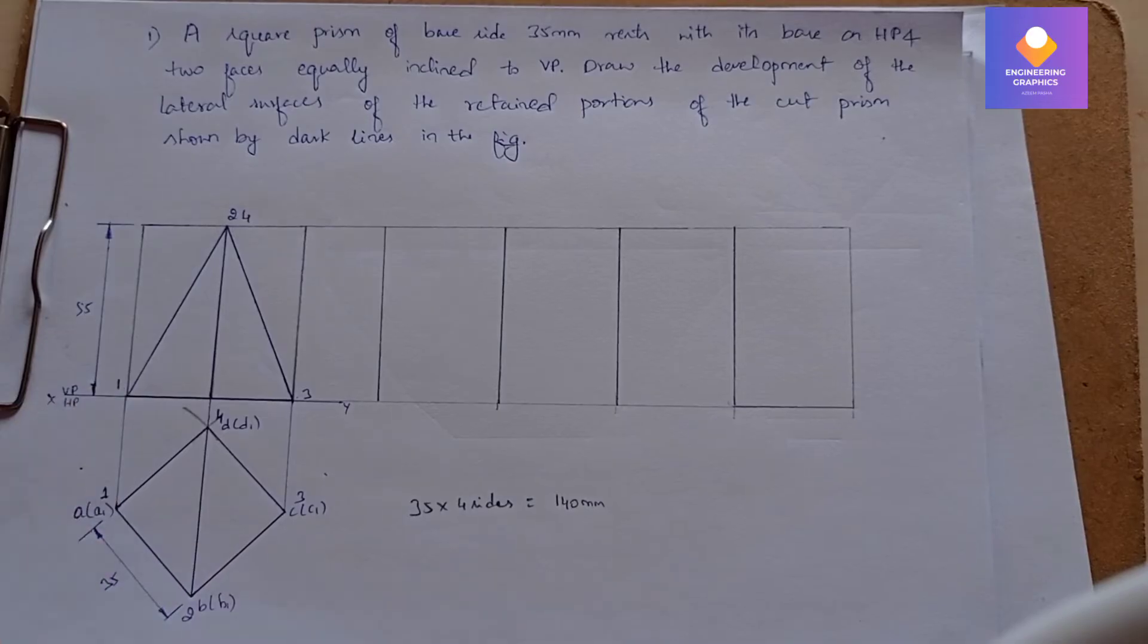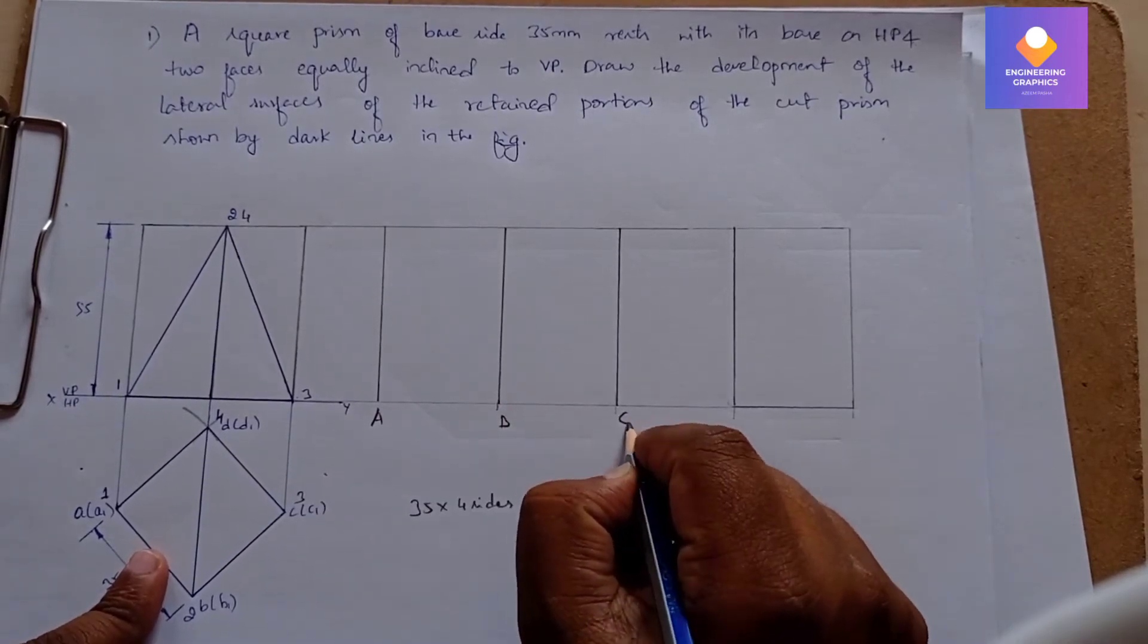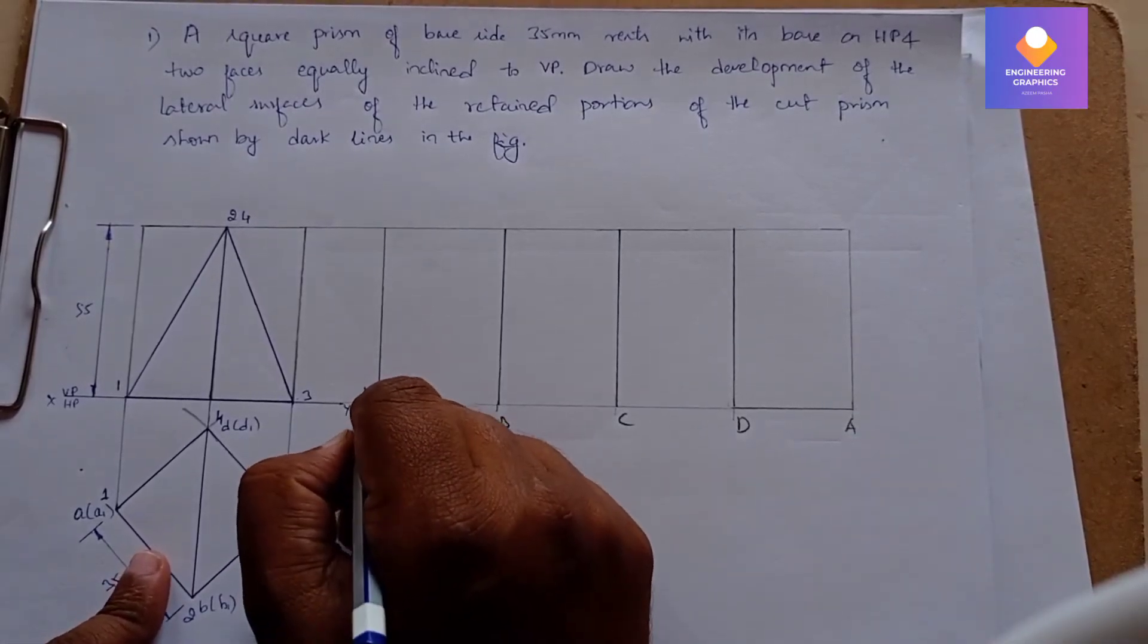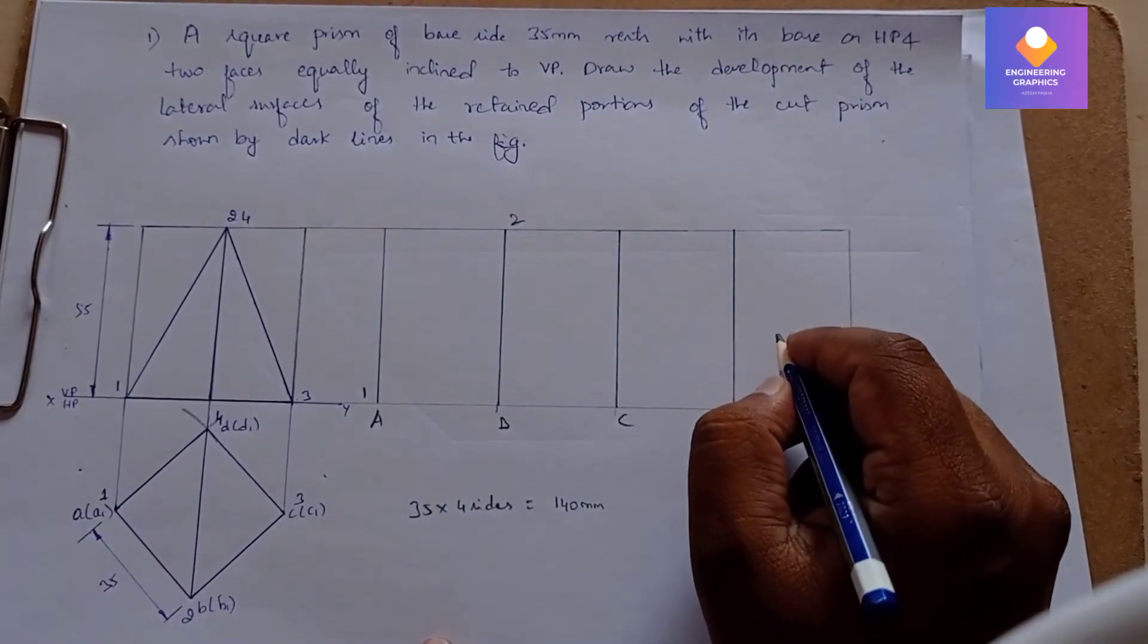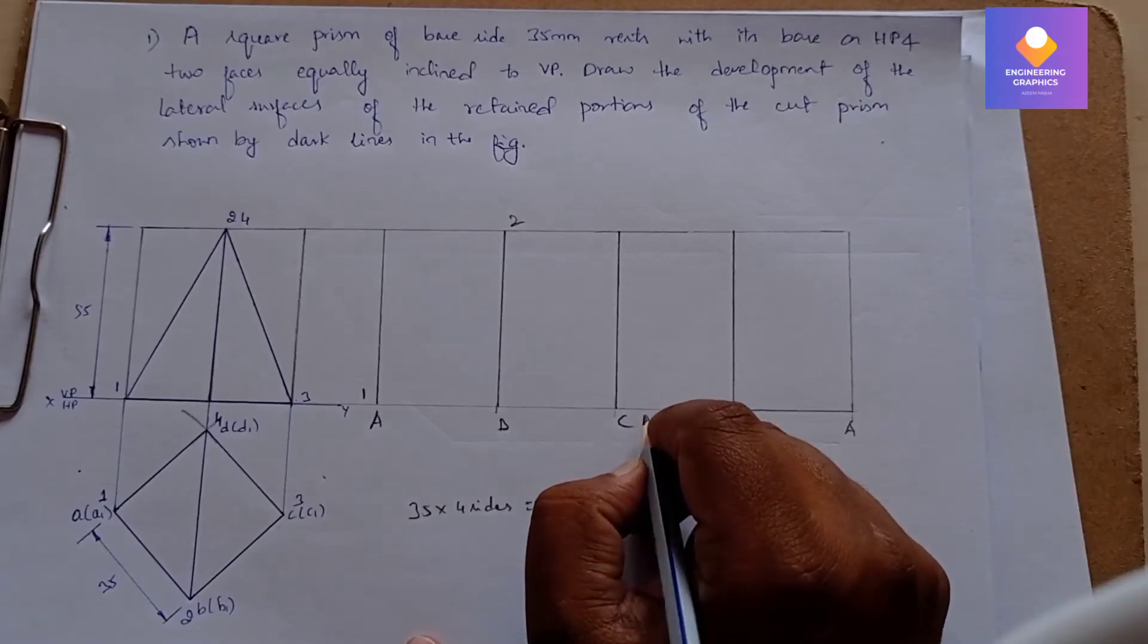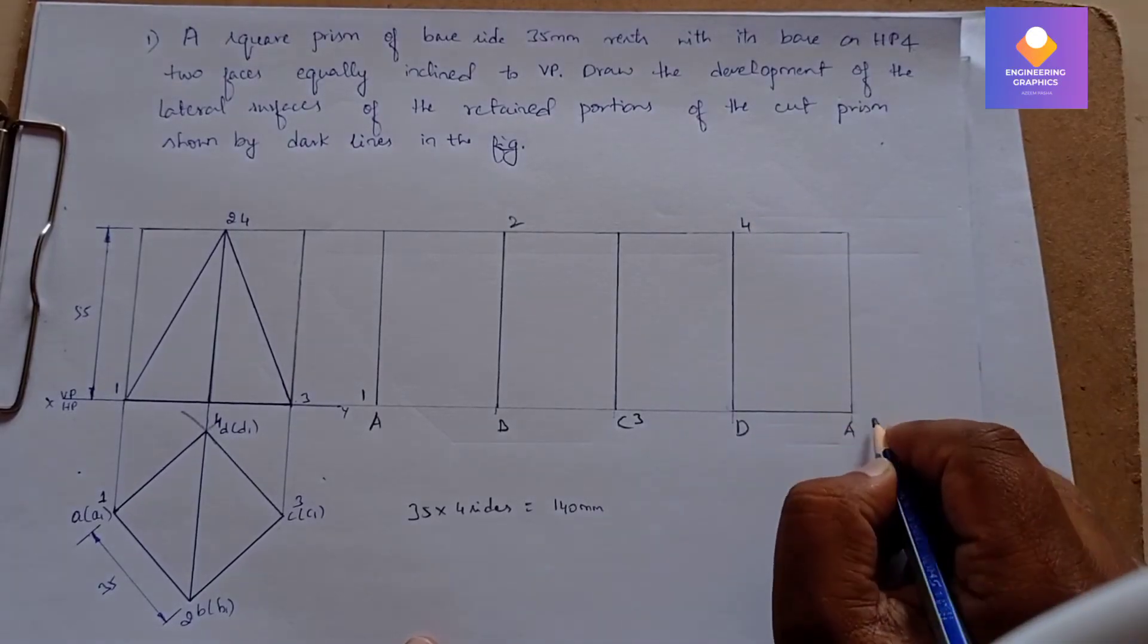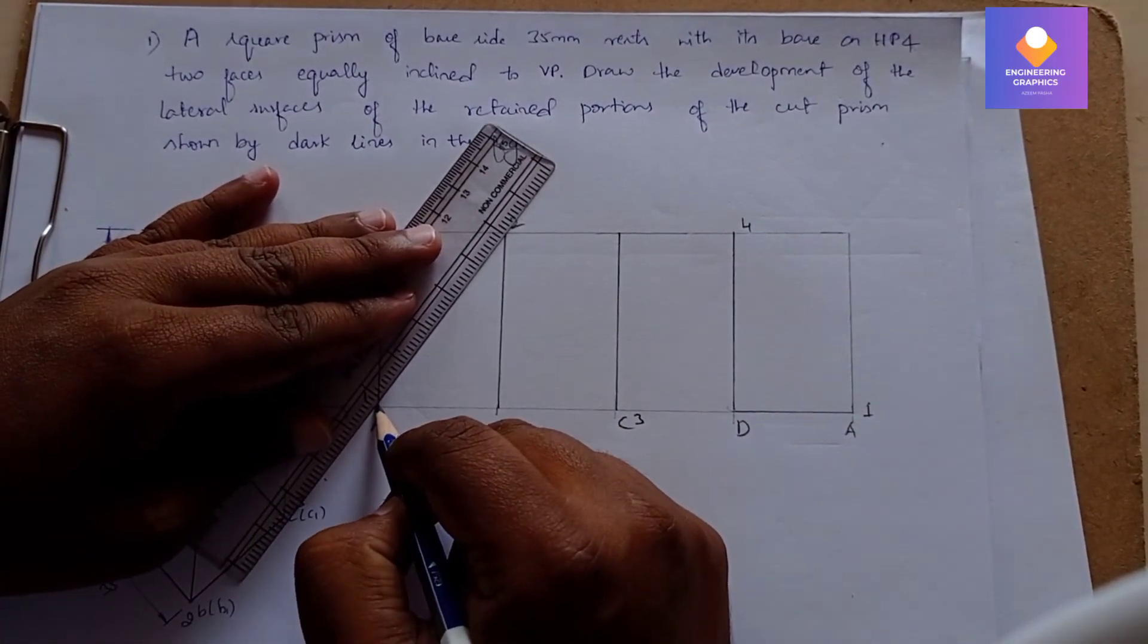Now we have to mention the naming here: capital A, capital B, capital C, capital D, and capital A. At A, it's cutting at point 1; at B, it is point 2; at C, it is point 3; and at D, it is point 4. Now we will join all these points 1, 2, 3, 4.